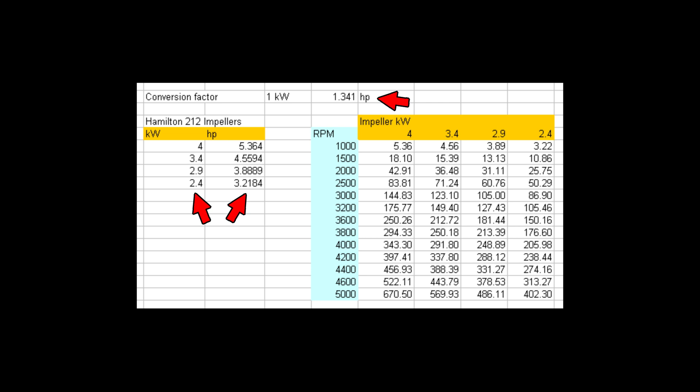So you can see the 4KW becomes a 5.364 horsepower impeller. So it turns out this 5.364 horsepower is actually at 1,000 RPM, and then the horsepower requirement goes up from there, and that is a cubic function.